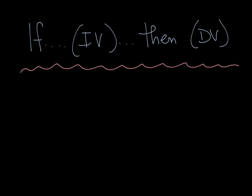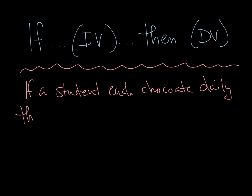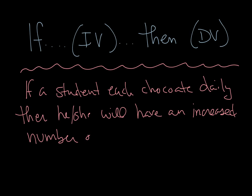So if a student eats chocolate daily, then he or she will have an increased number of pimples. And when we do that, the independent variable is again the chocolate, the dependent variable is what we're measuring - the number of pimples.